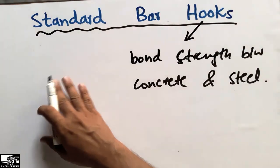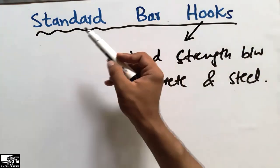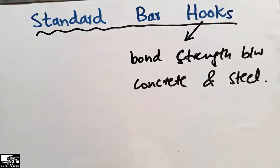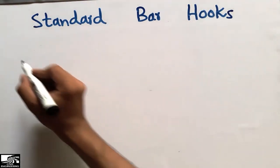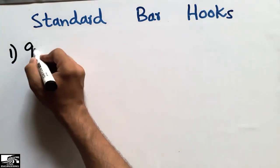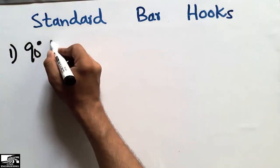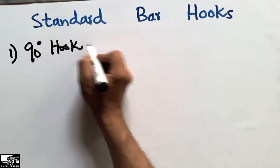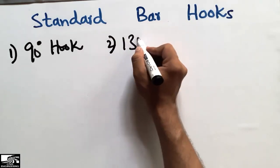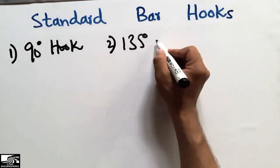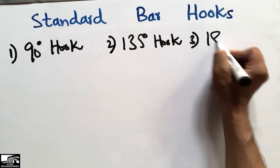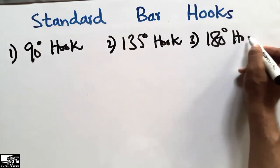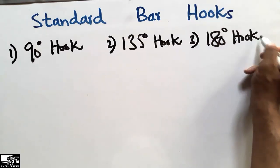Now I will explain and define the three different types of standard bar hooks recommended by the American Concrete Institute (ACI). There are three types of bar hooks: the first one is the 90-degree hook, the second one is the 135-degree hook, and the third one is the 180-degree hook.